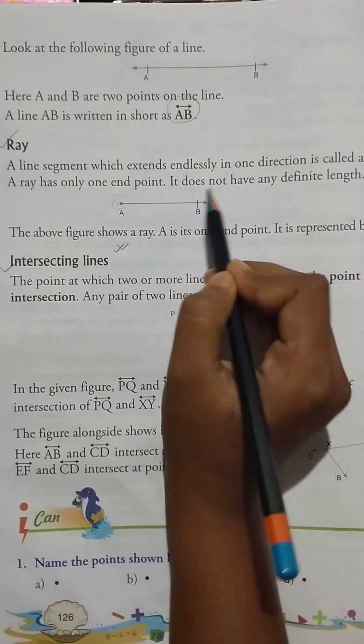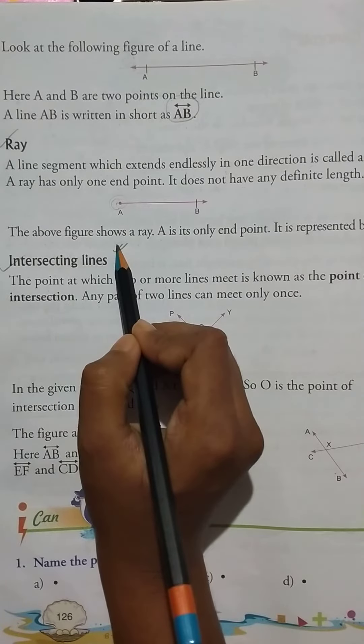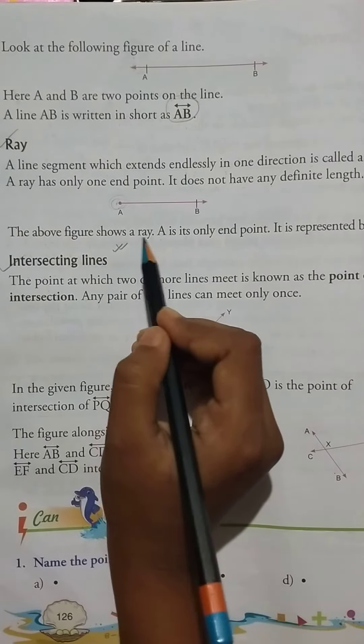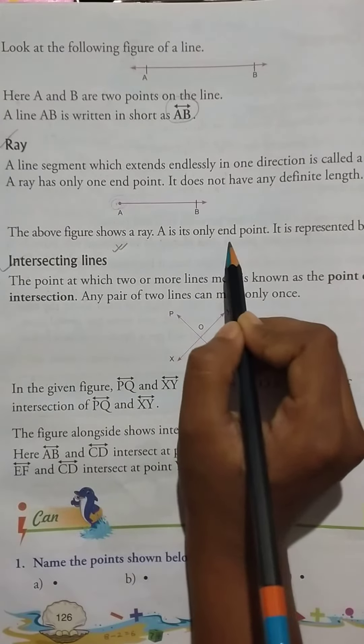It does not have any definite length. The above figure shows a ray. A is its only end point.